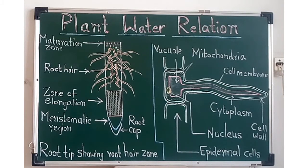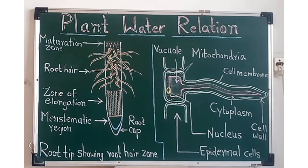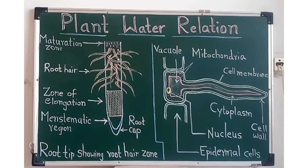The last region is called the region of maturation. In this region, the enlarged cells undergo differentiation to form different types of tissues like cortex, endodermis, xylem, and phloem. This region helps in fixation of the plant as well as conduction of absorbed substances.